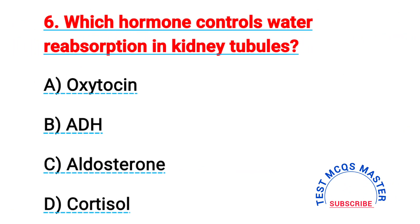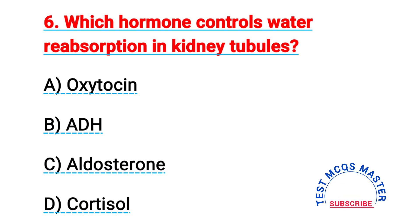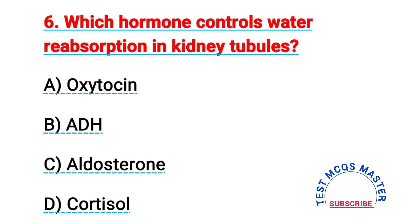Question number six: which hormone controls water absorption in kidney tubules? The right answer is B, ADH.